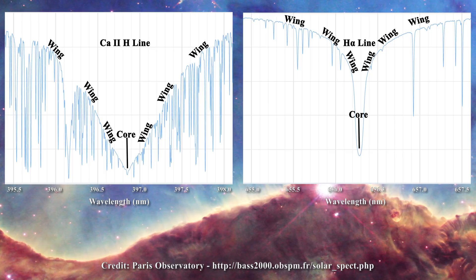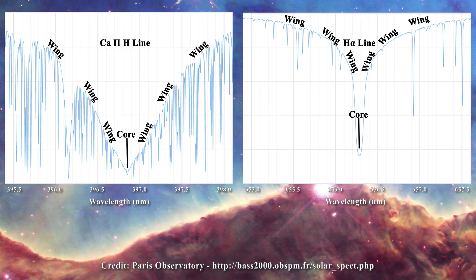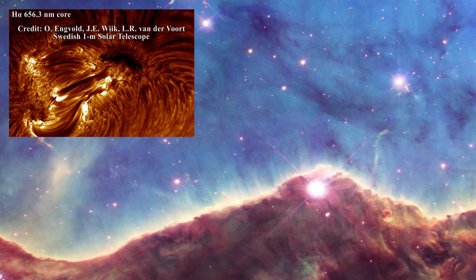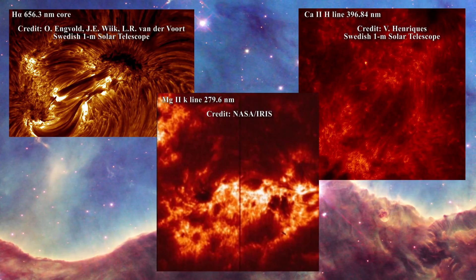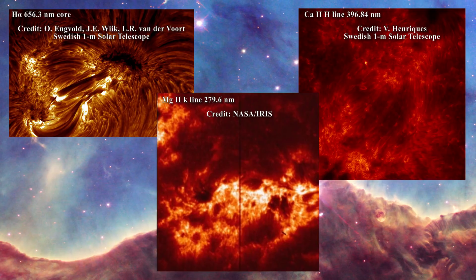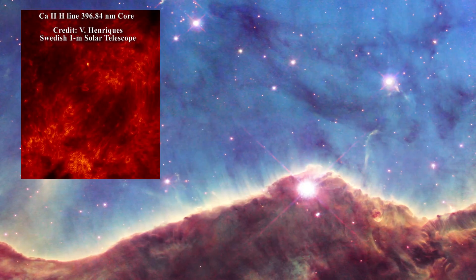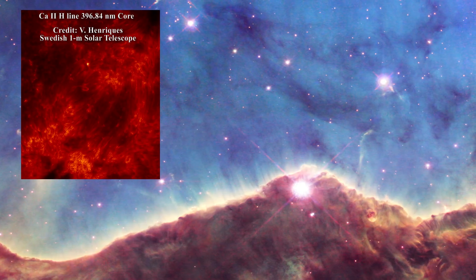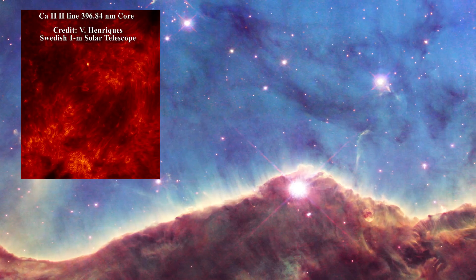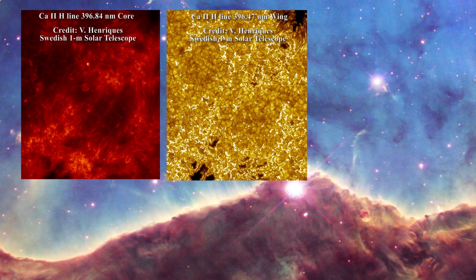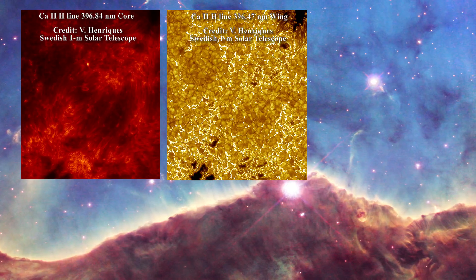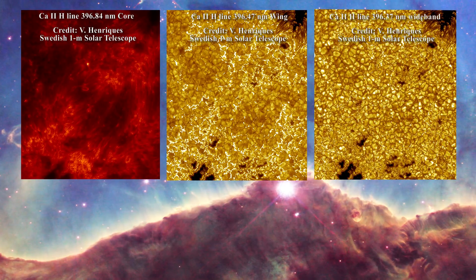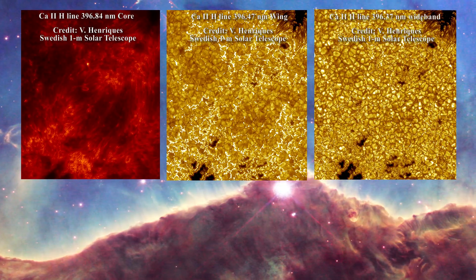If an image of the Sun is taken at the central frequencies of these optically thick lines, one obtains an image of the upper chromosphere. Here are examples of the hydrogen alpha, calcium, and magnesium line. Conversely, if one captures an image in the wings, one will get closer to the level of the photosphere. Here is an image captured on the calcium 2H line at the core at 396.84 nanometers using the 1 meter Swedish solar telescope. Next, here is an image captured in the wing of this line at 396.47 nanometers. Now we see the granules on the photosphere. Finally, here is an image at 396.37 nanometers and now the photosphere becomes even sharper.